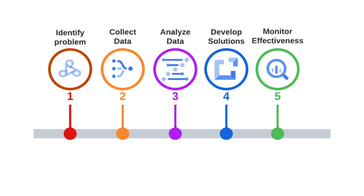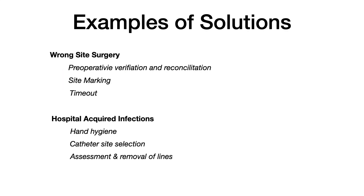Typically, a root cause analysis involves a collaborative interdisciplinary group from the hospital or health system. They identify the problem, look at data, analyze that data, discuss potential solutions to refine the system or process, put those changes into effect, and monitor effectiveness moving forward. As a result of root cause analyses, we can see solutions such as preoperative verification and site marking for wrong-site surgeries, and major pushes for hand hygiene, catheter site selection, and assessing the need for line removal to address hospital acquired infections.